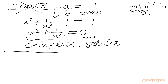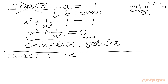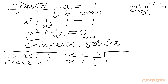So to summarize our solutions: from case 1 we have x = ±1; from case 2 we have x = 1 and x = 10; and from case 3 there are only complex solutions. Therefore our final real answer is x = ±1 and x = 10.